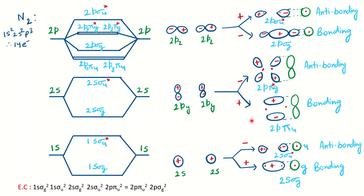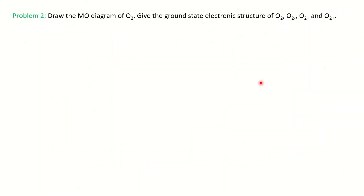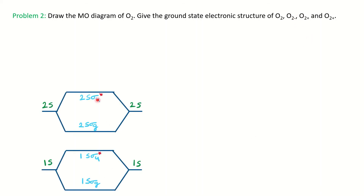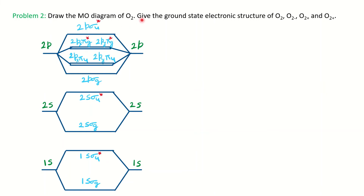If they ask you to draw the energy level diagram, you draw and label it. If they ask for the electronic structure, you write the configuration. If they ask for salient features and orbital pictures, you draw those as well. Similarly, you can do this for oxygen. The question: 'Draw the molecular orbital diagram of oxygen and give the ground state electronic structure for O₂, O₂⁻, O₂⁺, and O₂²⁺.' Oxygen has 16 electrons total, with each oxygen having configuration 1s²2s²2p⁴.